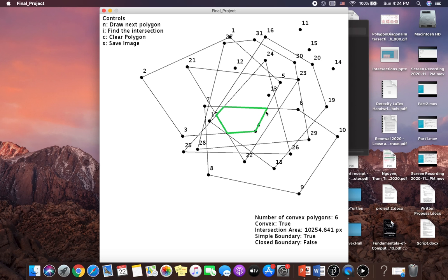This part. And we still show the number of convex polygons is 6, and the intersection area is more than 10,000 pixels. Yeah, that's pretty much my demonstration.